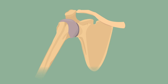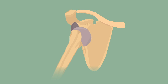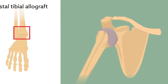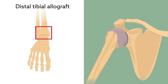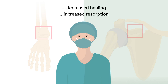Bone graft performance is one of the most important factors for successful glenoid reconstruction to treat anterior shoulder instability. Although distal tibial allografts are gaining popularity over the more commonly used coracoid autografts, many orthopedic surgeons remain concerned about the potential for decreased healing and increased resorption when using allograft bone.